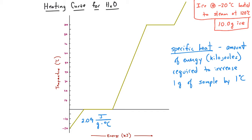Different states of matter have different values for specific heat. We already looked at the one for ice. The specific heat of water is 4.184 joules per gram per degree Celsius, and for steam it's 2.03 joules per gram per degree Celsius. This is the value for the amount of energy required to raise one gram of water, ice, or steam by one degree Celsius.